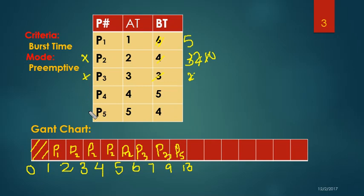Now we have P1 and P4, both with burst time 5. I'm going to choose P1. 13 plus 5 is 18. P1 finishes at time 18 and is done. Now only P4 remains. I'm going to put P4 here. P4 has burst time 5, so 18 plus 5 is 23. P4 finishes at time 23 and is done. The CPU has completed its execution.